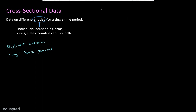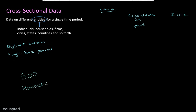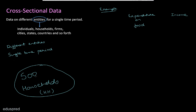Let me give you an example. Let's say we are collecting data on expenditure on food and income — we are interested in the relationship between these two variables. For this purpose, we have randomly selected 500 households. We are going to visit each of these households one by one and ask them to help us with this information — their expenditure on food and their income.